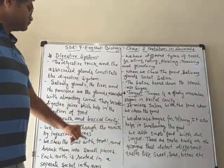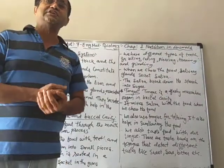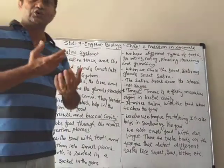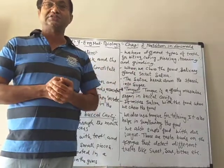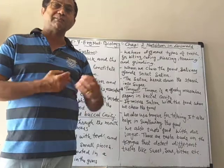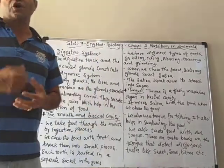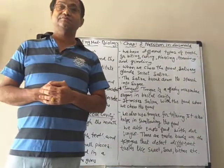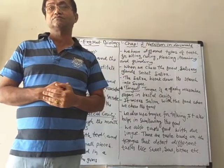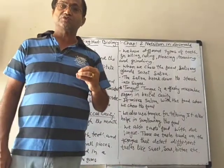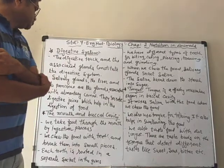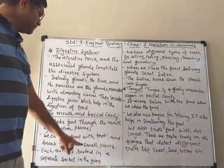We chew the food with teeth. In the mouth there are teeth — you know about teeth from lower standards also. When we are born we don't have teeth; then after a few years you get teeth which are known as milk teeth, because after a few more years they fall down one by one and then you get a new set of teeth which are known as permanent teeth, which you keep for a long time until you get older.